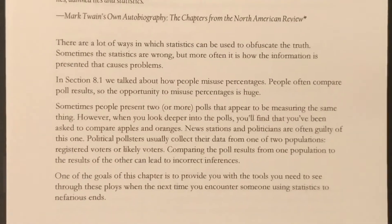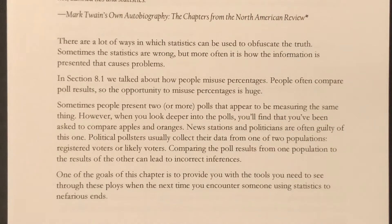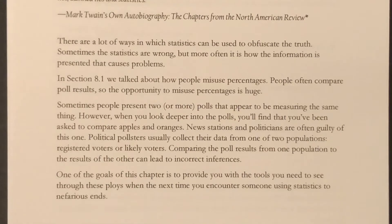Sometimes people present two or more polls that appear to be measuring the same thing. However, when you give it a good look, you'll realize you're being asked to compare apples and oranges. News stations and politicians in particular are often guilty of this, because political pollsters tend to collect their data by either questioning registered voters or likely voters. They are different populations, different groups, and the data we get from them means different things. All these different companies release their poll results at the same time, so you have two polls released on the same day being compared, but they're measuring different populations. One of the goals of this chapter is to provide you with the tools you need to see through these ploys the next time someone is using statistics in a nefarious way.